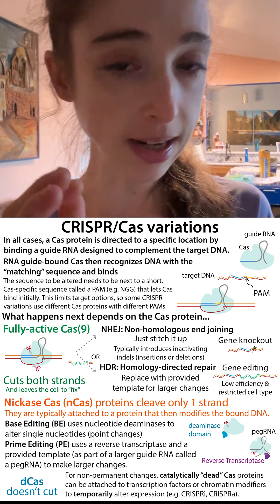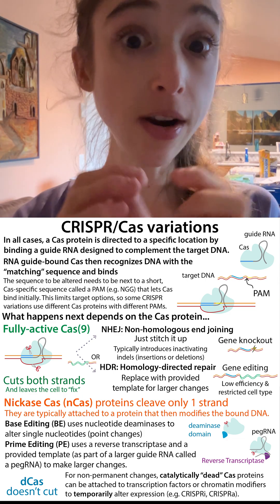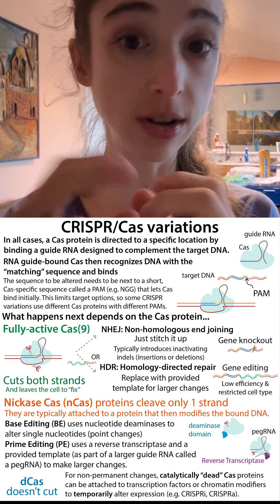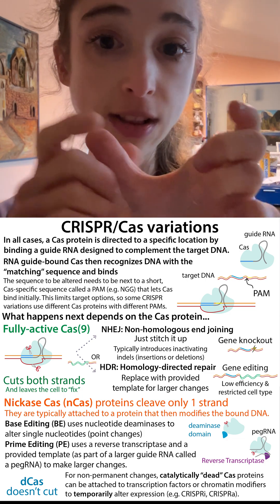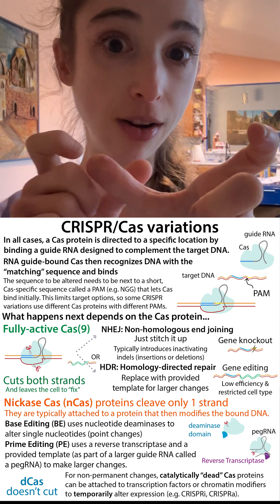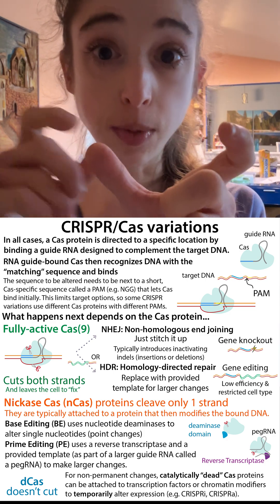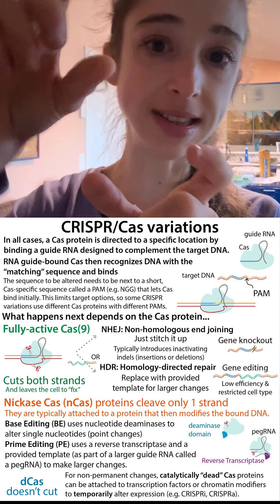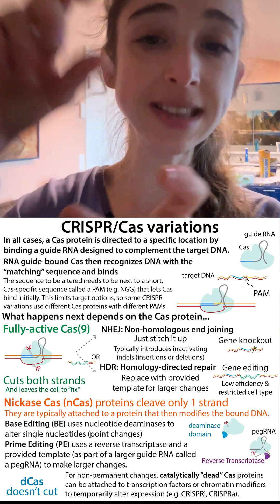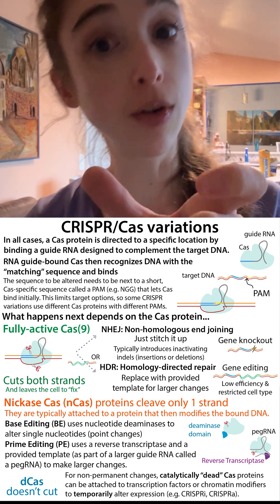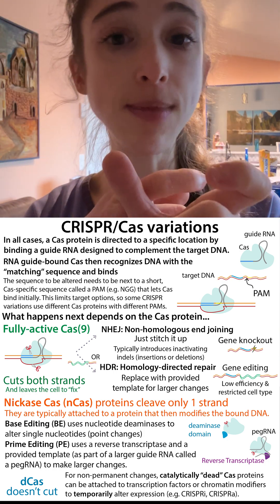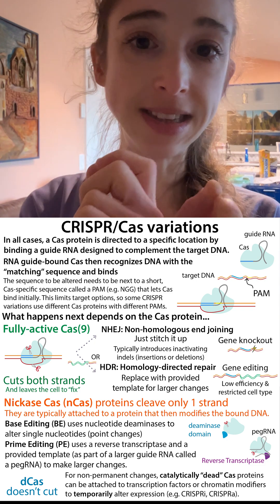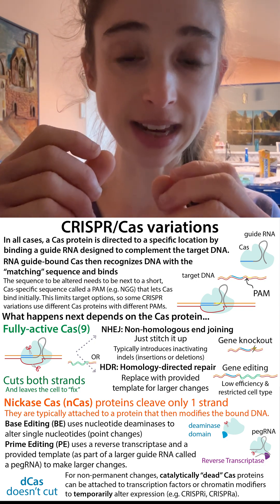There's also prime editing, where instead of having a separate piece of DNA providing alternative instructions, there is a longer guide RNA. This provides a template for a reverse transcriptase attached to the Cas protein, which can then reverse transcribe that RNA into DNA and incorporate that DNA when the cell does its repair.